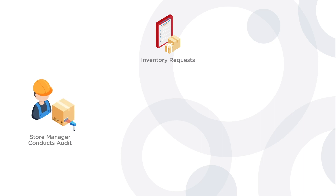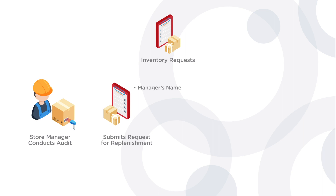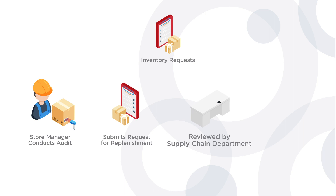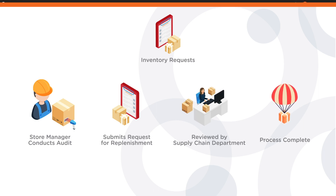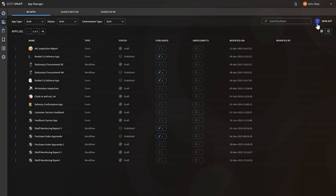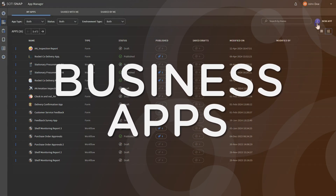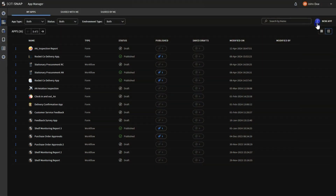The request form includes details such as the manager's name, contact information, store number, item details, and a justification for the submission. The supply chain department reviews and approves the request at the end of each week. Sodi Snap has introduced a new feature called Business Apps, which enables organizations to automate multiple business processes through a single app. Simply select New App and then select Create Business App to get started.